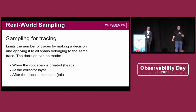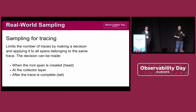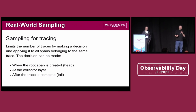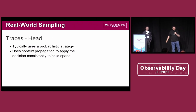We can make the decision either at the very beginning of data creation — at the root span as we call them — we can apply it at the collector, or we can apply it after the trace has been finished. There is a small difference between the second and the third points that we'll get to later.